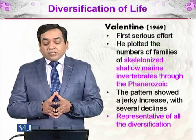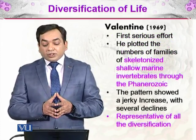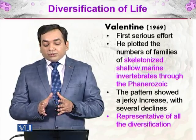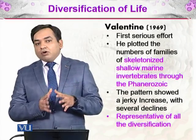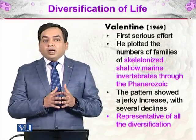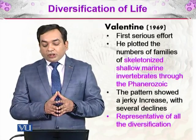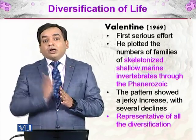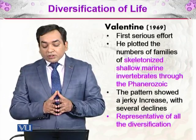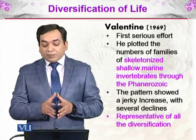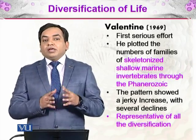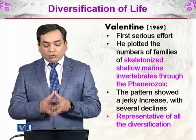Valentin, in 1969, was the first scientist to make a serious effort — he plotted the number of families of skeletonized shallow marine invertebrates through the Phanerozoic. He counted the number of species and plotted them against time. The pattern showed a jerky increase with several declines — it goes up, then comes down, repeatedly. He argued this was representative of all the diversification we see today, applicable to all species diversity on Earth's surface.